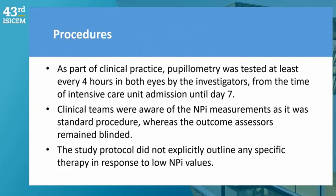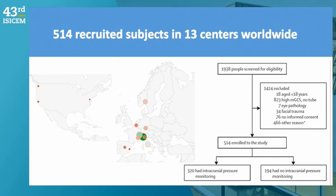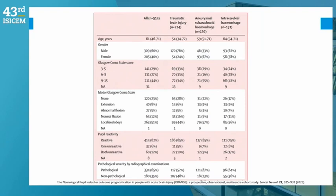We enrolled patients with those three pathologies requiring intubation and ventilation for neurological reasons, ICU admission, age 18 or older, with pupillometry as a standard of care. Data was collected every four hours and used to treat patients — it was an observational, not interventional, study, and outcome assessment was blinded. We screened almost 2,000 patients and enrolled 514, many in Europe but also in the USA.